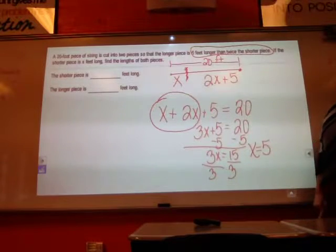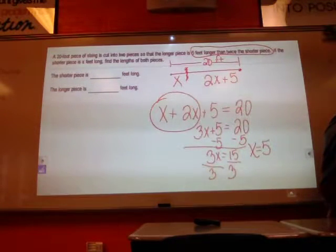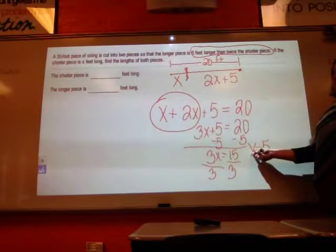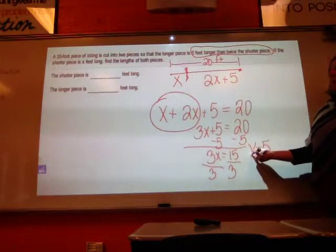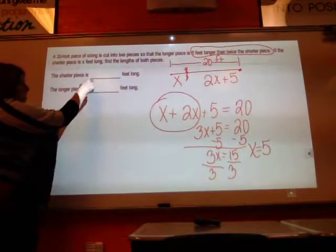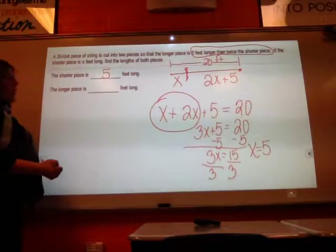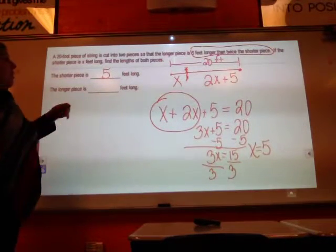Now, here's where I have to be careful because I have to read the question. The question said find the length of both pieces. Well, what does x represent? Well, x represents my shorter piece. So the shorter piece is x, and that means it's just five feet long. Well, then the longer piece, though...